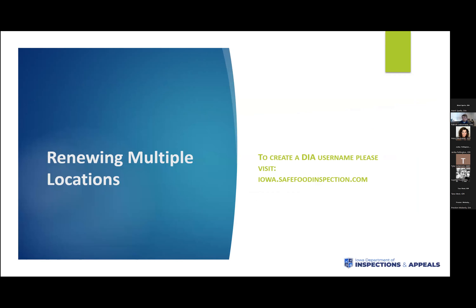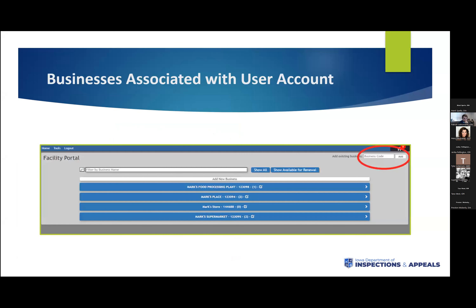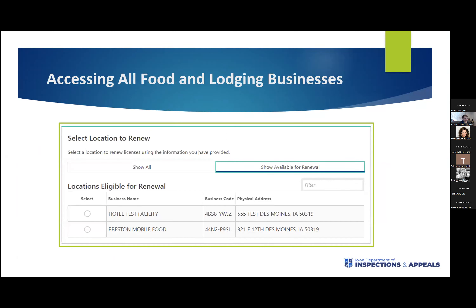If you have more than one facility or more than one business — think like a chain restaurant — you can connect all of your businesses together using a DIA username. If you haven't created one, you're going to want to go to iowa.foodsafeinspection.com and create a login by clicking new account. Once you log in, you'll see a box in the top right corner labeled business code. Enter the business code for all of your locations, which you'll find on your renewal, and all of those locations will tie your licenses to your single username. If you then use your DIA username and a license number in GovConnect Iowa, it returns every facility associated with your username — that could be two facilities or 30 if it's a large chain.